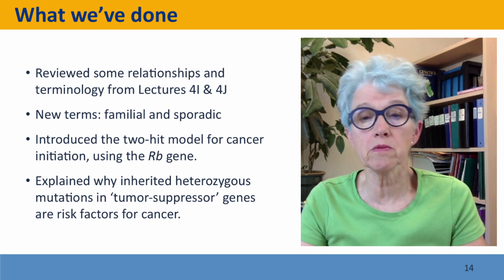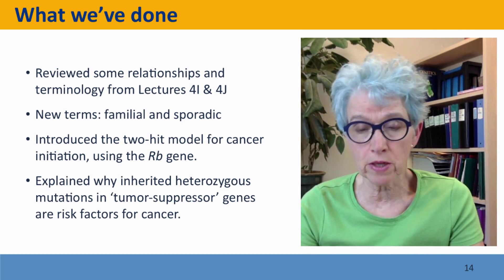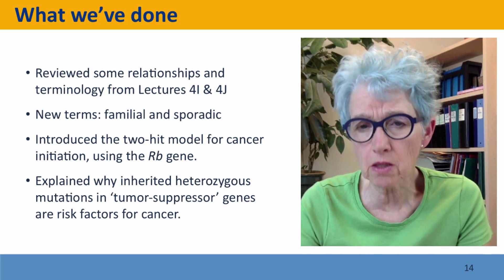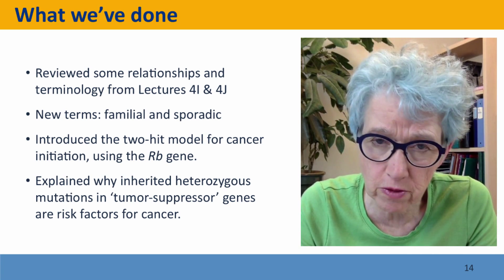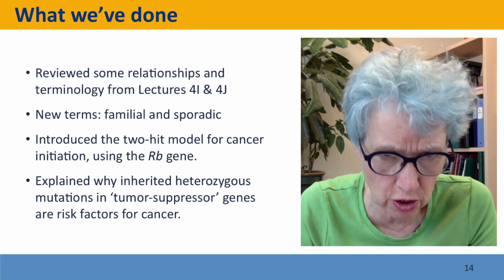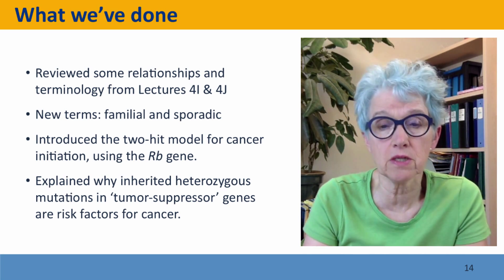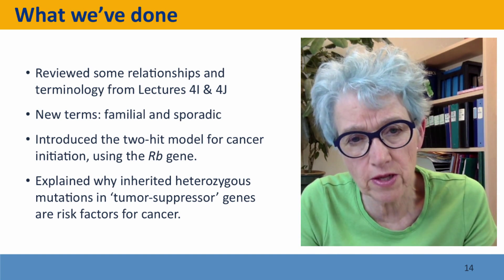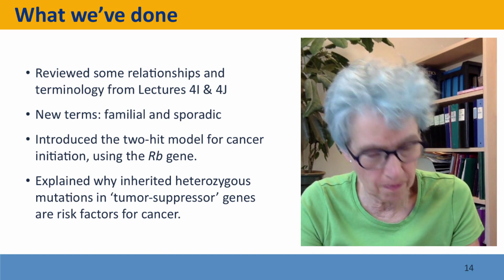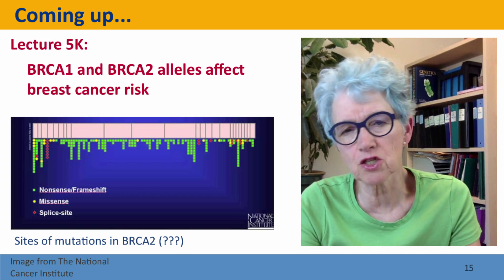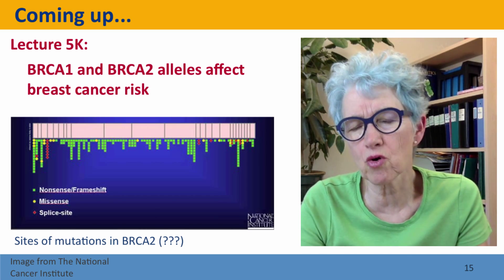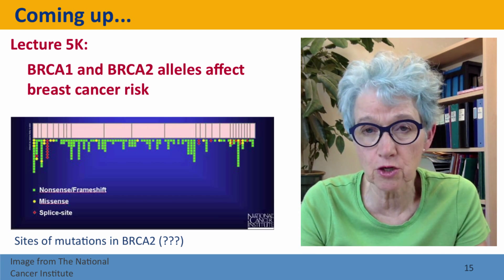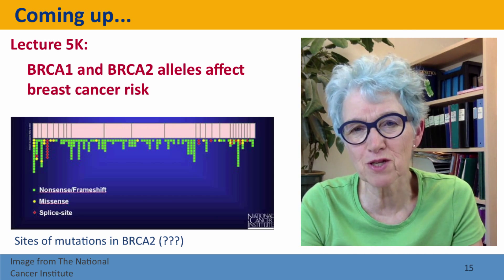We've introduced the two-hit model for cancer initiation using the retinoblastoma gene as an example. Because people with a single mutation in retinoblastoma have such a high frequency of cancer, it forms a very good demonstration of the model. We've explained why inherited heterozygous mutations in genes that limit cell growth can be risk factors for cancer. Coming up next, we're going to extend this analysis to the BRCA1 and BRCA2 alleles that cause a high risk of breast cancer.